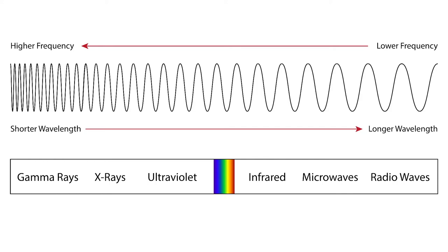For example, radio waves can reveal parts of the galaxy that are hidden in regions full of gas. Light waves, with their short wavelengths, get scattered and absorbed by the gas. Radio waves, however, pass through the gas because of their long wavelengths.